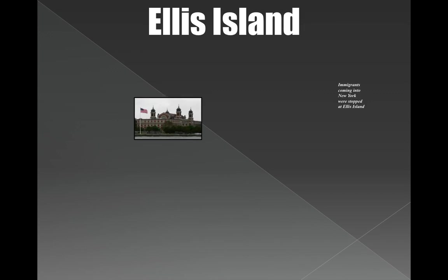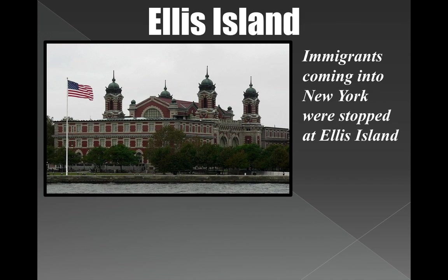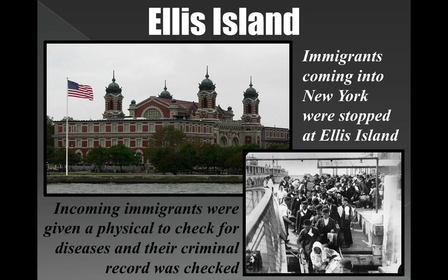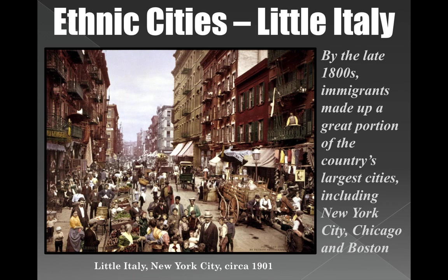When they entered New York Harbor, they went straight to Ellis Island — the first stop for people entering America. They went there kind of like a border check for disease and criminal record. Once they left Ellis Island, they went into the cities and formed their own neighborhoods. Many of those neighborhoods were ethnic neighborhoods where most people spoke the same languages and carried on the same traditions.